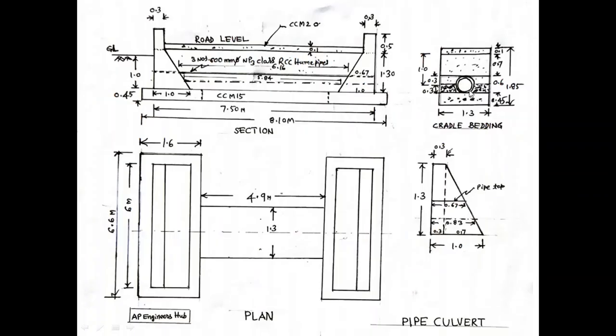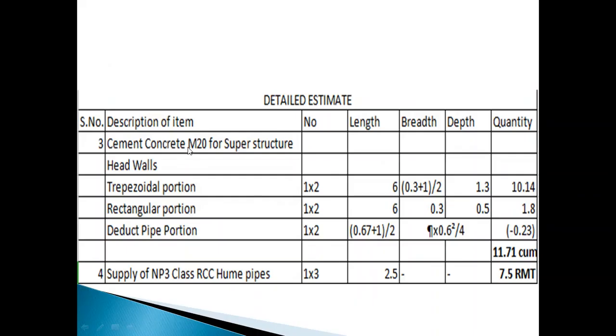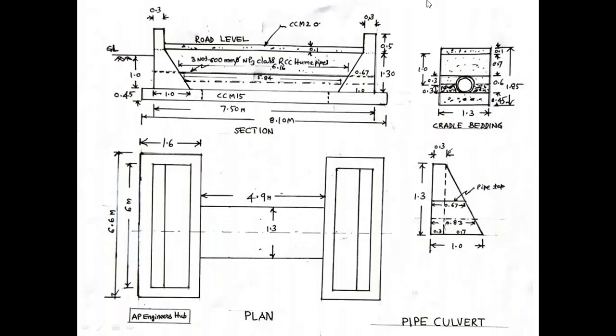This is 5.5 meters, that means 1.5 meters. Bottom tree is 1 meter, height is 1.3 meters.